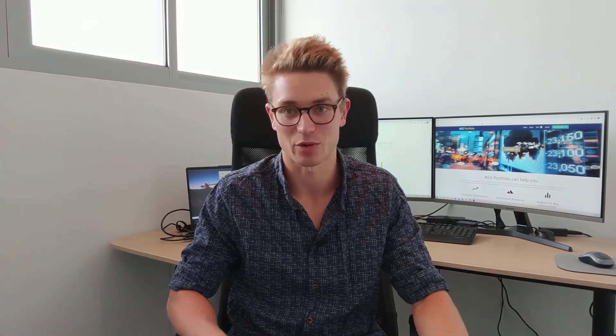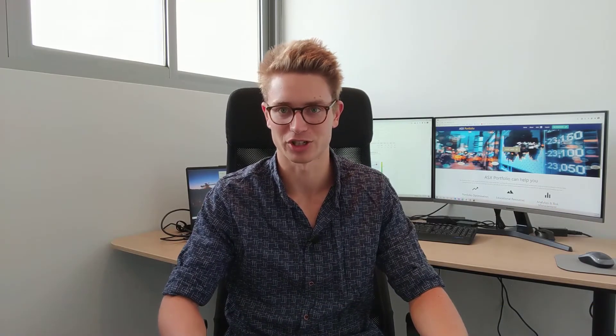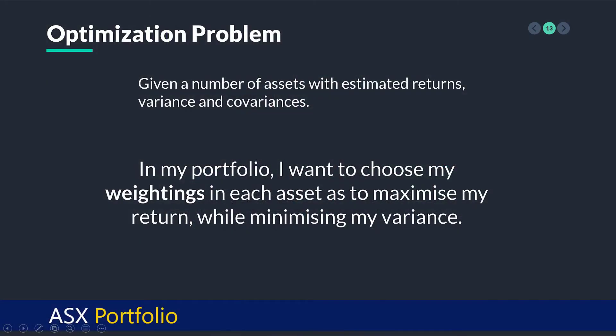This is pretty important: diversification versus return. Let's say we've got asset one and asset two. Do I have to pick asset two just because it's going down at the same time as asset one's going up? Why would I pick a losing stock just to get diversification? Well, essentially that's not how you go about it — it is an optimization problem. Given a number of assets in your portfolio, with estimated returns, variances, and covariances, I want to choose my weightings in each asset to maximize my return while minimizing my variance — for example, 10% in this stock, 20% in this stock.